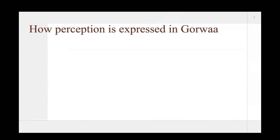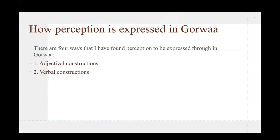Meanwhile, we have how perception is expressed in Gorwaa. Throughout my research, I have found that there are four ways of expressing perception in Gorwaa. The first way is through adjectival constructions. The second is verbal constructions. The third is copular constructions. And the fourth is this us construction that I am not 100% too sure about. However, it is very interesting, which is why I will talk about it later a bit more.